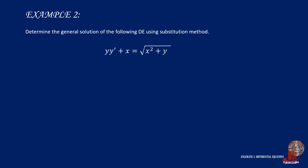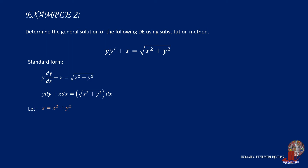Example 2. By using substitution method, we are asked to find the general solution of yy prime plus x is equal to the square root of x squared plus y squared. With y prime present, transform the equation to its standard form so y prime becomes dy over dx, and then transpose the denominator dx to the other end. Let's simplify the equation by substituting z to x squared plus y squared, so the derivative of z is 2x dx plus 2y dy.